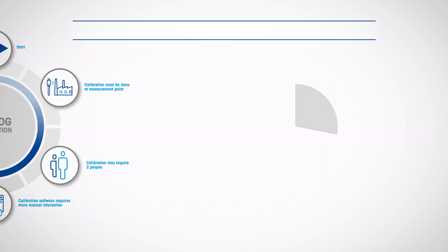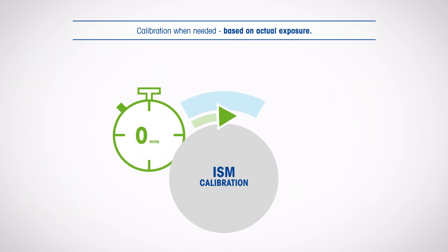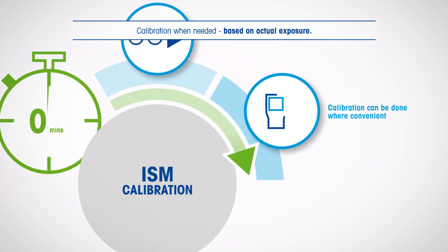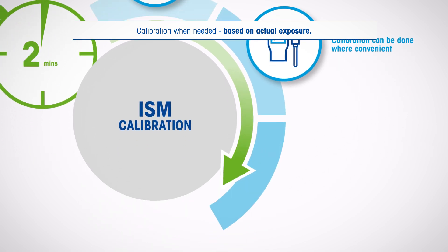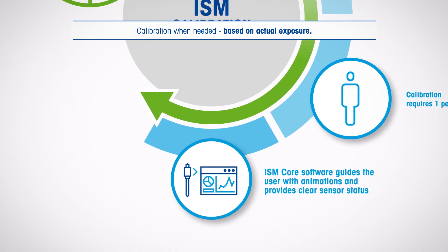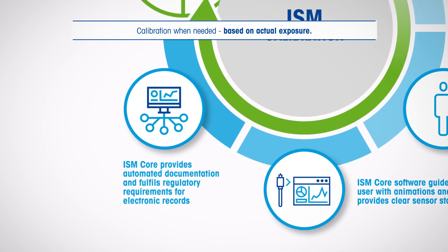Using Mettler Toledo ISM sensors with the ISM core software package, calibration and adjustments are done in just minutes. This process delivers fast, accurate, and traceable results, performed safely, wherever convenient, and only when necessary.